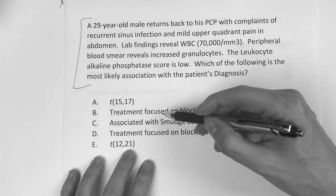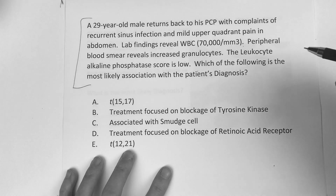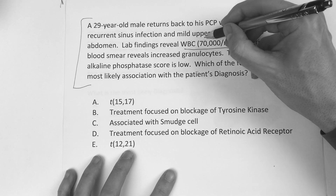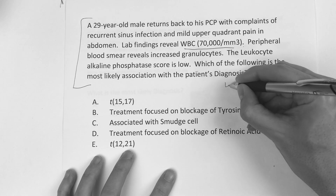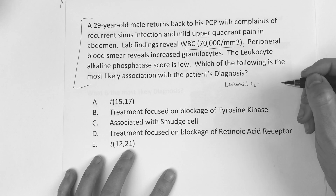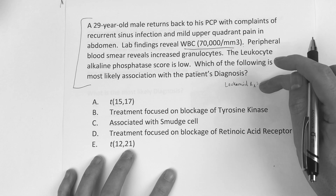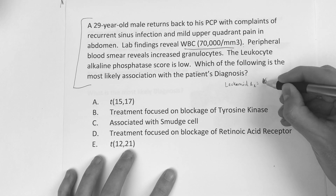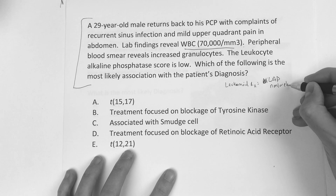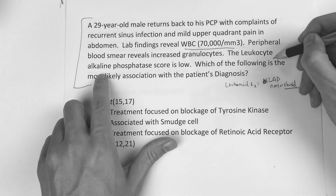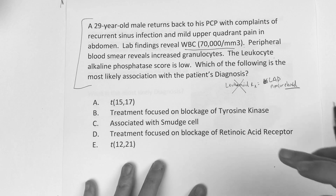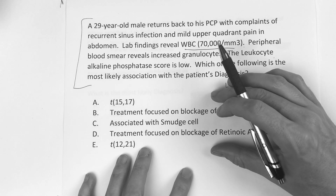Based on the answer choices, we're talking about leukemias. The white blood cell count is elevated. Now, how do I know this isn't just a leukemoid reaction? Because in a leukemoid reaction, the leukocyte alkaline phosphatase score is either normal or elevated. In this case, the LAP — leukocyte alkaline phosphatase — is low. So we know it's not a leukemoid reaction. We're in the ballpark of some type of leukemia.